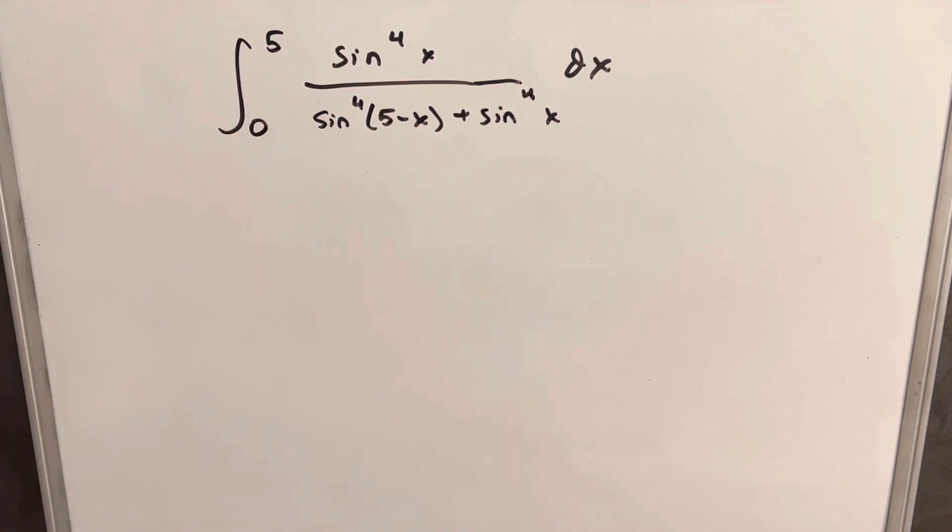Hey, we have on the board the integral from 5 to 0 of sine to the 4th x over sine to the 4th of 5 minus x plus sine to the 4th x. So what we can do on this, even though it looks really complicated, is we can use the King's Principle, and I think that's going to help us simplify this pretty nicely.